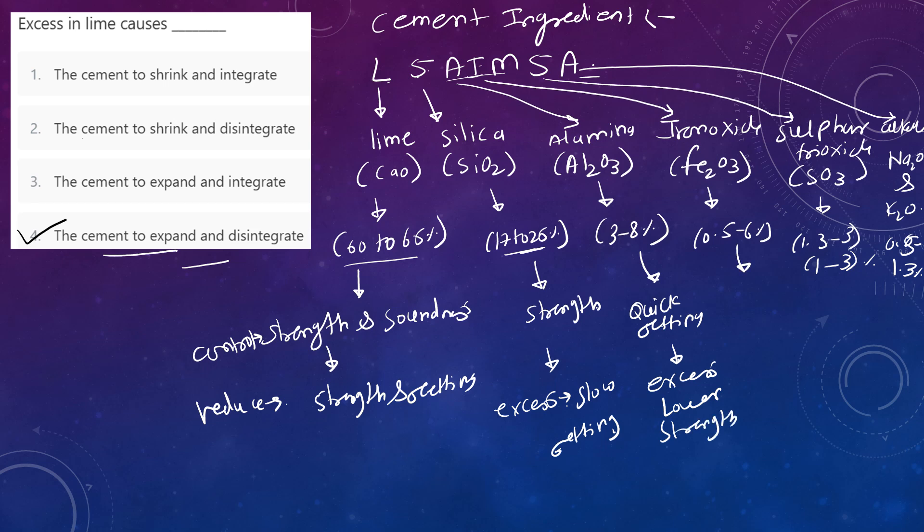Iron oxide gives color and is used for fusion or melting purpose. Then magnesia, MgO, with percentage 0.5 to 4%. Magnesia gives color and hardness. Excess of magnesia causes cracks and unsoundness.